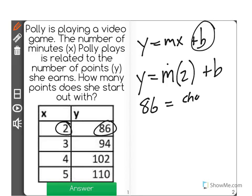That's the change in y over the change in x. Change in y from 86 to 94 is 8, and the change in x is 1, so m equals 8.